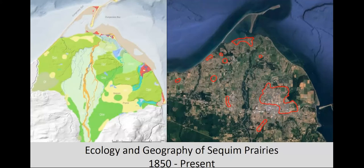Back in the 1850s, the General Land Office had surveyors go out and survey lands across the Pacific Northwest. These maps were extremely conservative in what they mapped as a prairie — the red polygons show open areas with only prairie vegetation, no trees or shrubs. Realistically, Sequim was an open landscape even outside those polygons, with groves of Garry oak, cottonwoods, and alders. Historic descriptions describe a two-to-three-mile-wide swath of relatively open grassland from Washington Harbor over to Morse Creek.